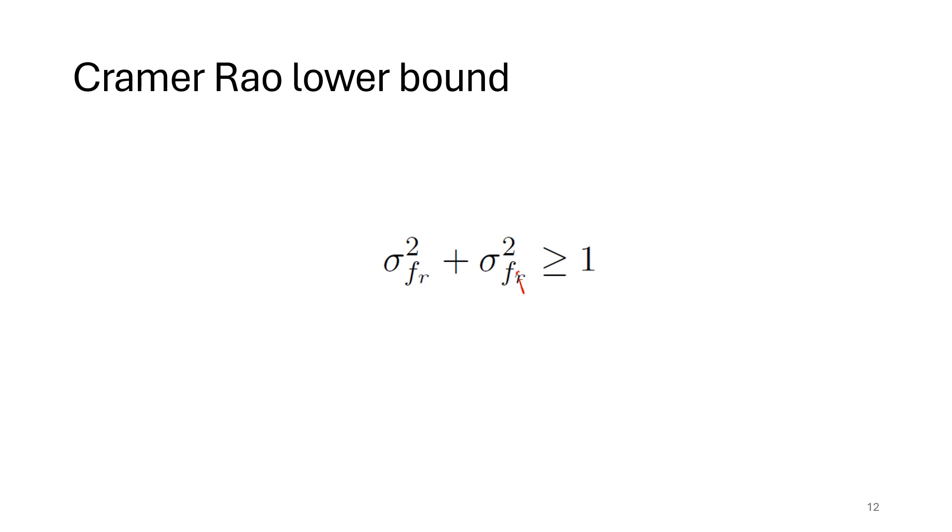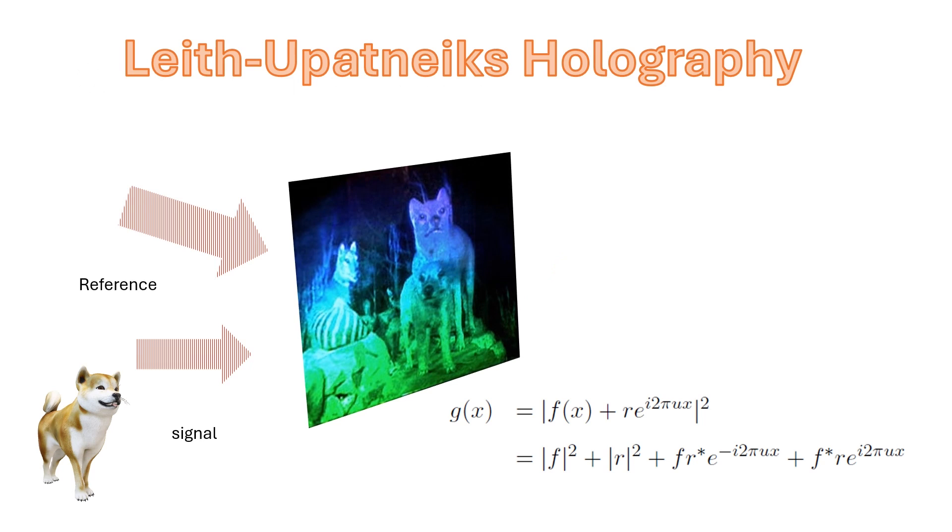So that's how holography works. If we take multiple measurements, we can get to this bound. If we make a single measurement, it's more challenging, but people often want to do more efficient systems and make single measurements. And so a popular method for doing that is Leith-Upatnieks holography, where rather than shifting the reference to multiple phases, we have a reference beam where the phase changes spatially.